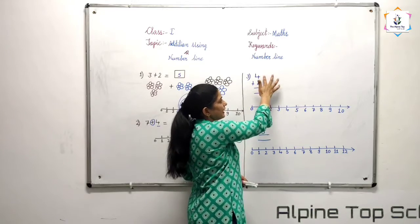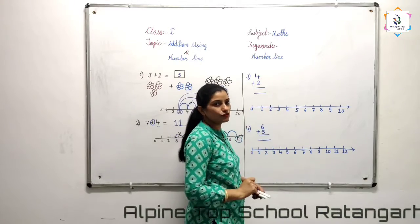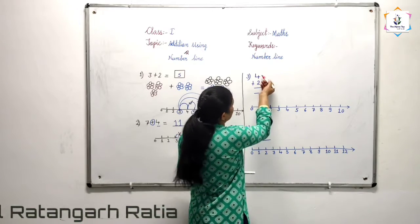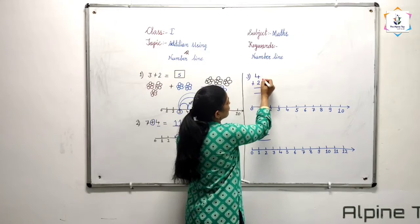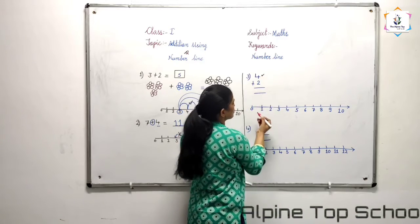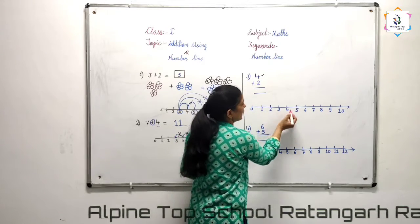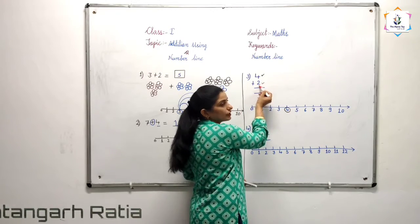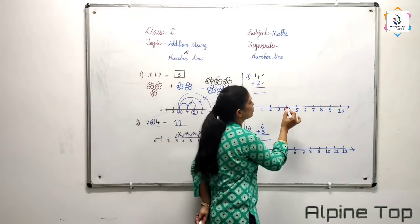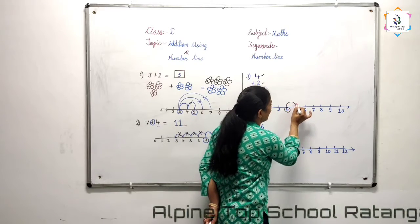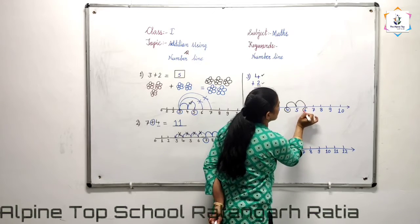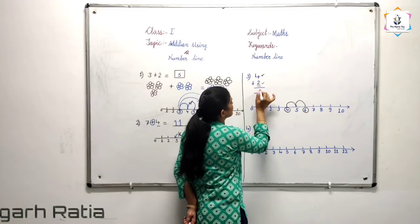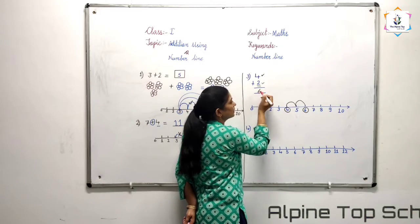If the sums are written horizontally, we can also do them on the number line. First we have to find the first number. The first number is 4 — 0, 1, 2, 3, and here is 4. We have to move the second number of steps, which is 2: 1 and 2. We move 2 steps forward and the answer is 6.